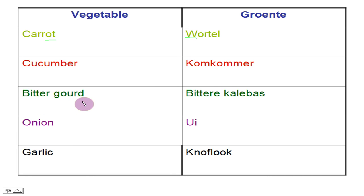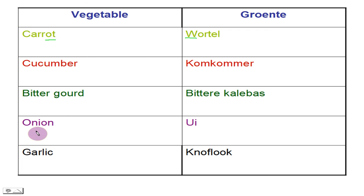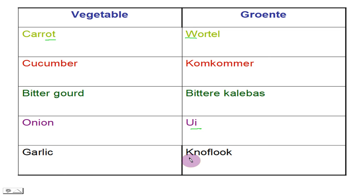Bitter gourd — yes, bitter kalebaas. Onion — yes, ui. Garlic — yes, knoflook.